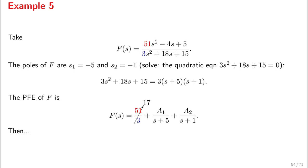And now be careful here. The partial fractions expansion: the constant term is 51/3. 51 is the coefficient of the highest order term, and 3 is the corresponding coefficient in the denominator. So this is 17 plus the rest as before: A₁/(s + 5) + A₂/(s + 1). And this is the new partial fractions expansion.